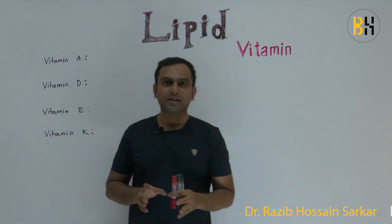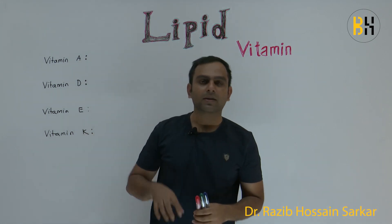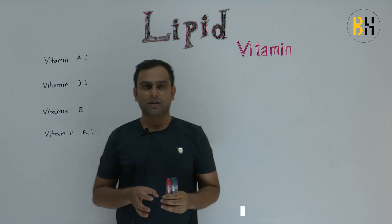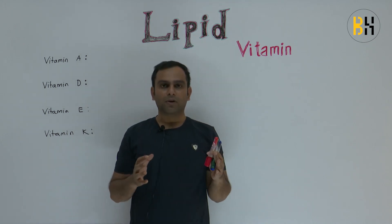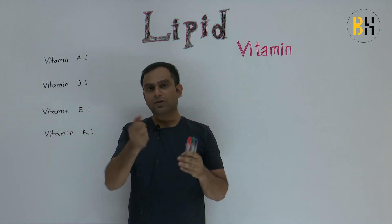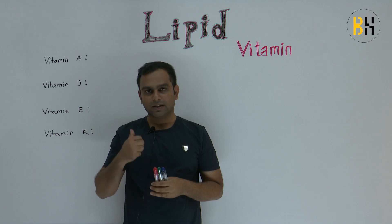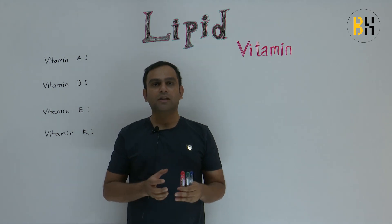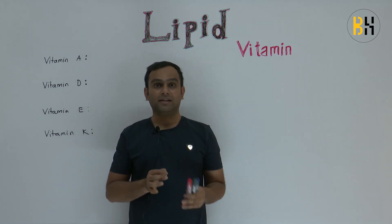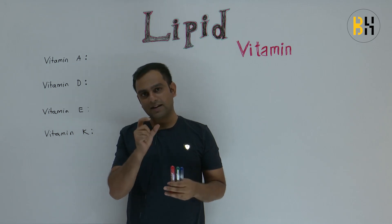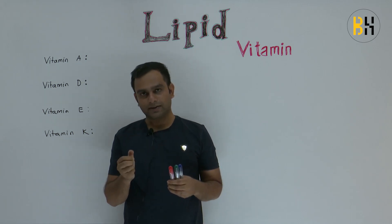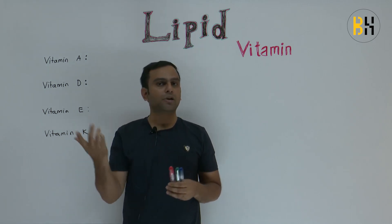Let's see how the vitamin is available. How do we do this? We usually have lipids. Lipids are very good. This is the vitamin — this is ADEK. This is a very good vitamin.